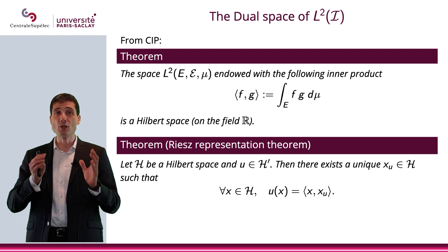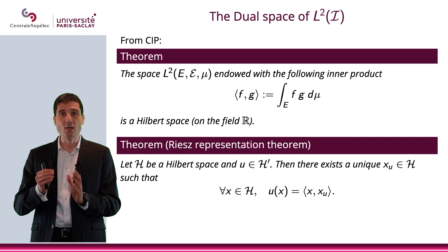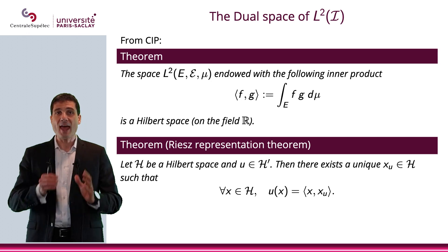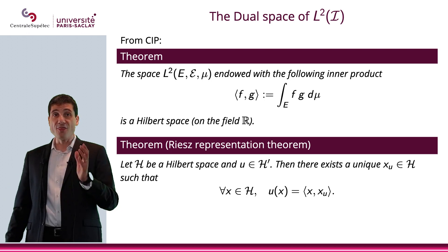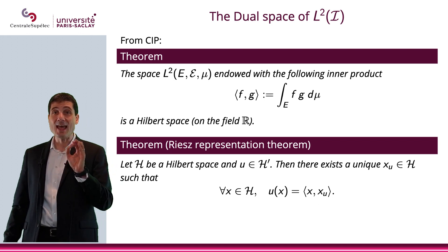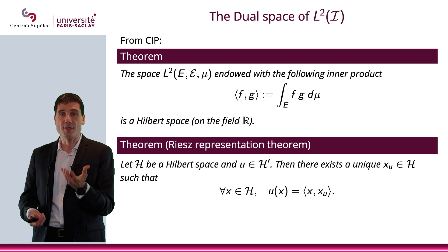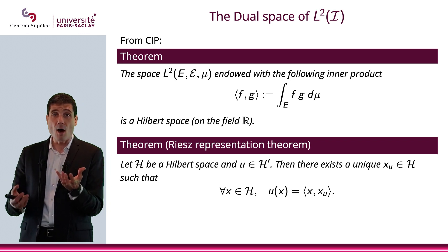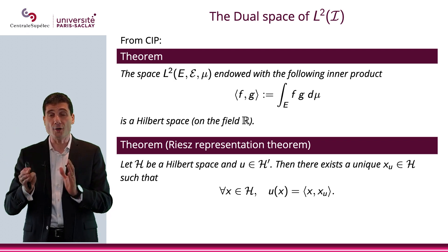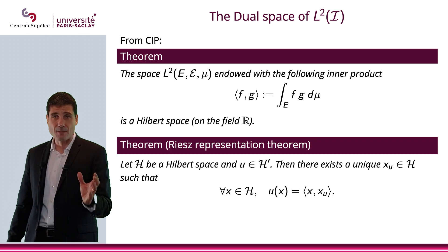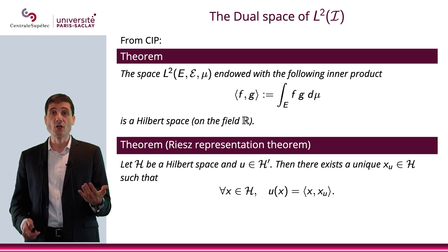That theorem states that if I have a Hilbert space H, and if I have a linear and continuous function that goes from H to R — in other words, if I have an element in the topological dual H prime — then there exists a unique x_u in H such that u(x) can always be represented as an inner product of x with that x_u. So any linear continuous function from H to R, any element in the dual space, can be represented as the scalar product with someone. That is the Riesz Representation Theorem.